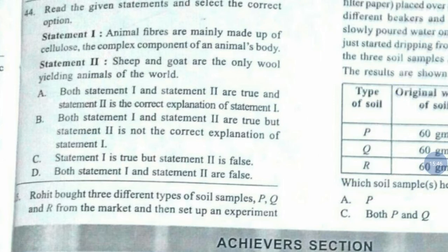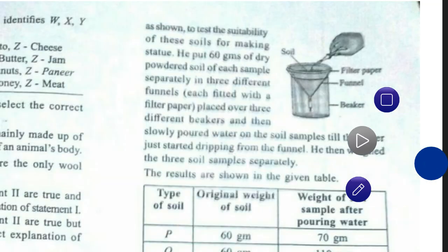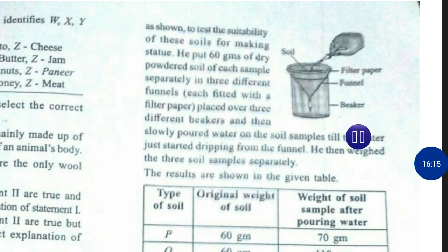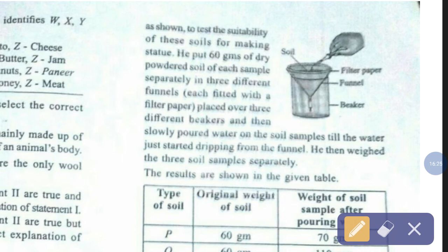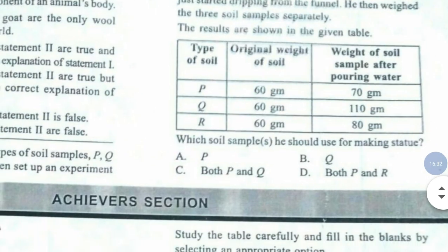Question number 45. Rohit bought three different types of soil samples P, Q and R from the market and set up an experiment to test the suitability of these soils for making statues. He put 60 grams of dry powdered soil of each sample in three different funnels fitted with filter paper and slowly poured water until it started dripping. He then weighed the three soil samples. Which soil sample should he use for making statues? The correct answer is option number B — Q.